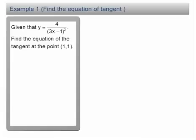Example 1, finding the equation of tangent. Given that y equals 4 over 3x minus 1 squared, find the equation of the tangent at the point (1,1).